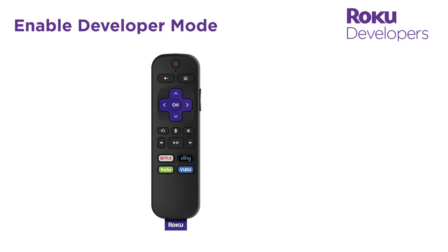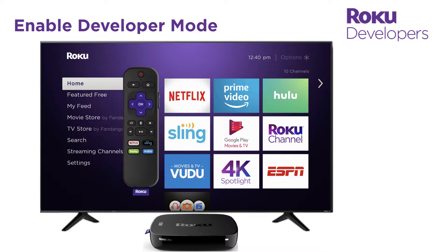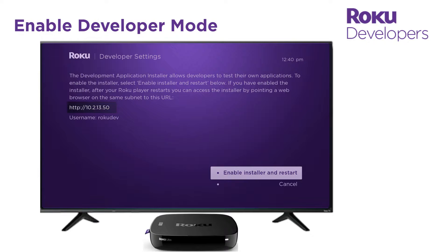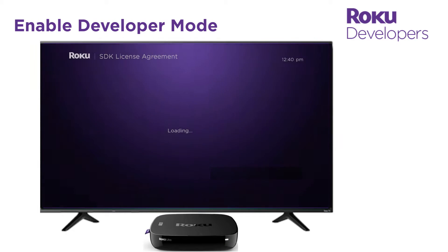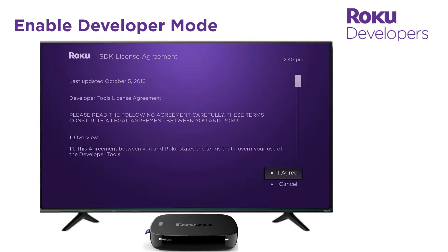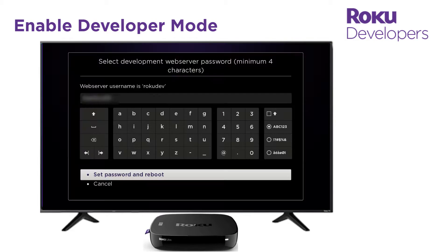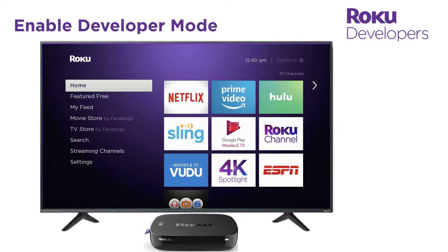To enable developer mode, use your Roku remote or Roku remote app and press home three times, up twice, and then right, left, right, left, right. Write down the URL of your Roku device that is displayed on the screen, and then enable the development application installer. Read and accept the developer tools license agreement, which enables you to build custom channels with a Roku SDK and other developer tools. Enter a case-sensitive password for your Roku device. Once you submit this password, your Roku device reboots. When the device finishes rebooting, it is activated in developer mode.